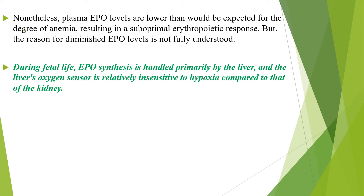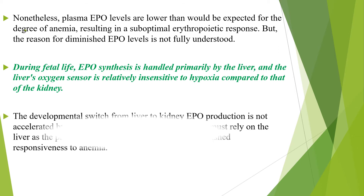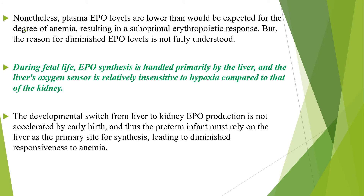During fetal life, erythropoietin synthesis is handled primarily by the liver, and the liver's oxygen sensor is relatively insensitive to hypoxia compared to that of the kidney. The developmental switch from liver to kidney erythropoietin production is not accelerated by early birth, and thus the preterm infant must rely on the liver as the primary site for synthesis, leading to diminished responsiveness to anemia.